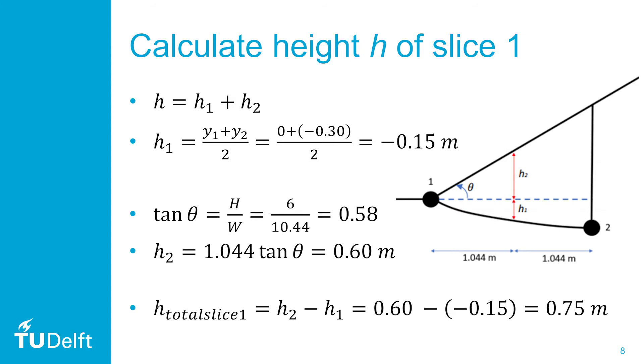H2 can be calculated using trigonometry. The tangent of the total slope can be calculated and is then equal to the slope height h over the slope width w, which are given in the table. H2 at the midpoint can then be calculated by multiplying the horizontal distance to the halfway point of the slice by the tangent of theta. When h2 is known, the total height can be determined by subtracting h1 from h2.